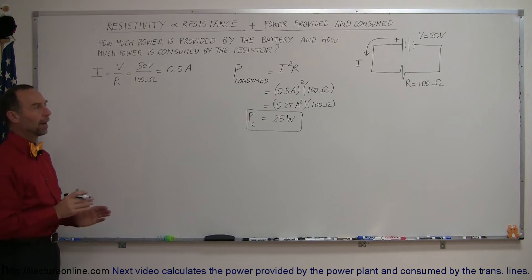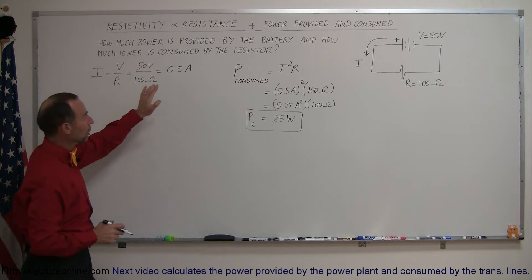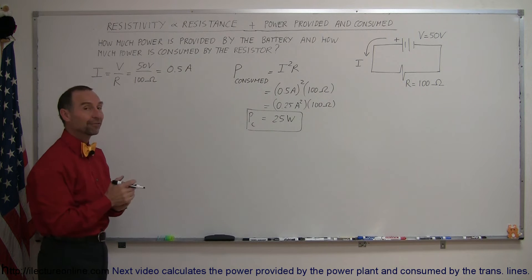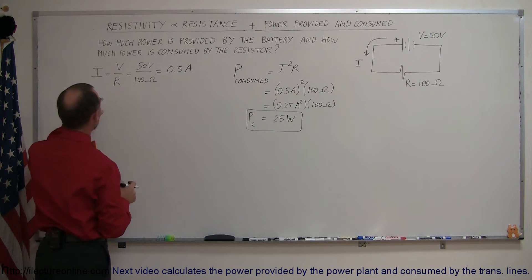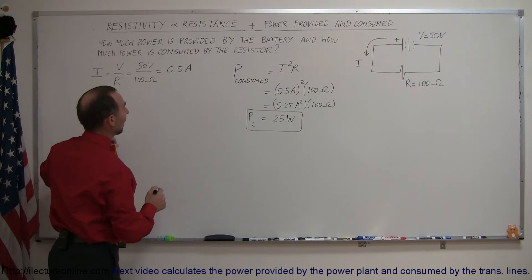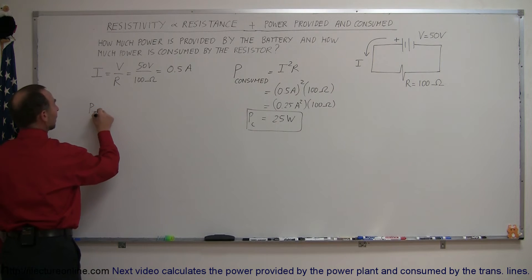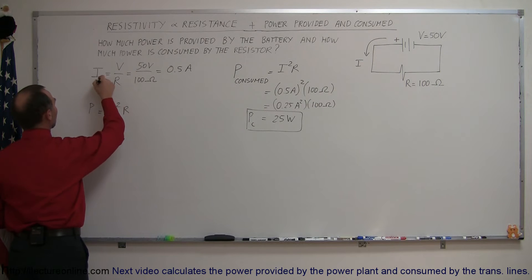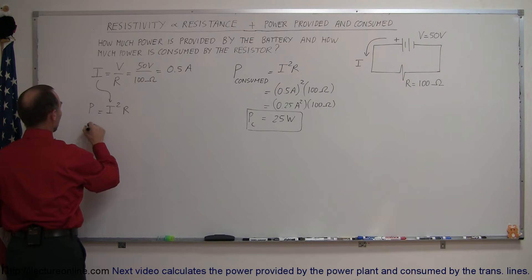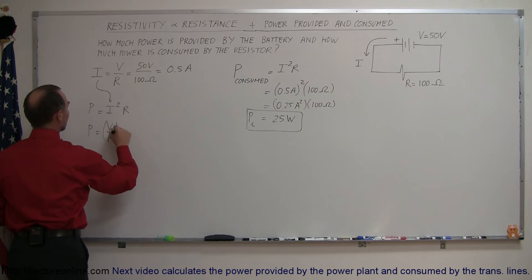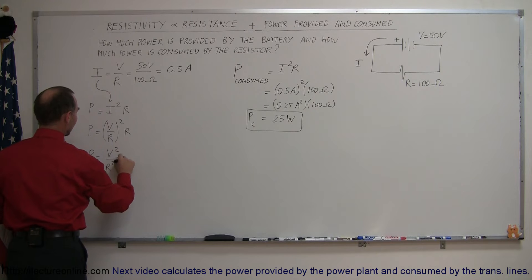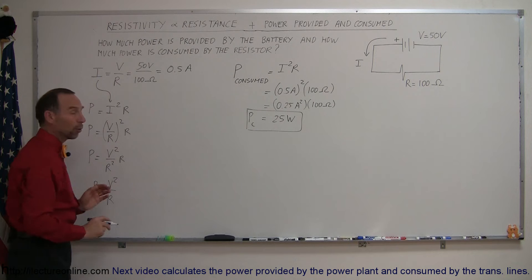So how much power is provided by the battery? If we combine now Ohm's law with the power equation, we can get a different form of the equation. For example, we can replace I by V over R. So power is equal to I squared R. And then if we replace I by what I is equal to according to Ohm's law, we get power is equal to V over R quantity squared times R. So power is equal to V squared over R squared times R, which simplifies to power is equal to V squared over R. So that is another form of the equation.